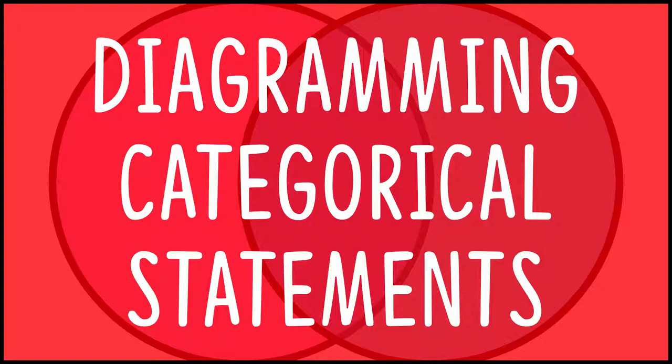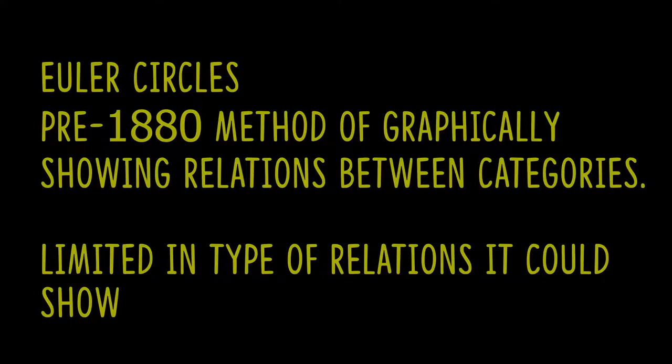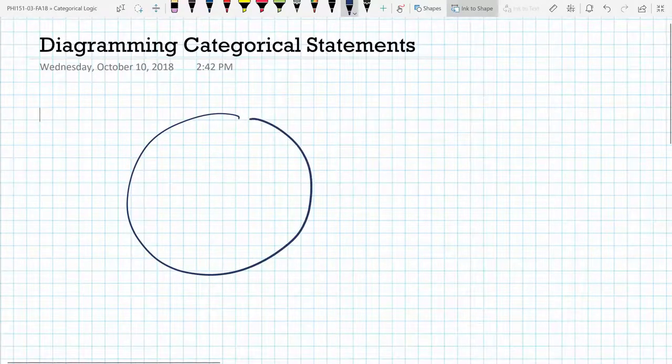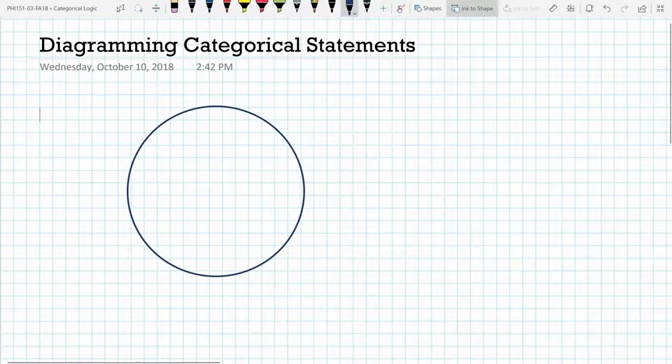Before Venn created his diagramming method that we're going to use, the basic way that we were able to show relations between different categories of things is what we call a Euler circle, and they look something like this, where you have this, and this would be the set of things P, and then there was another set within it, the set of things S. So we can talk about what things are in set S or in set P.